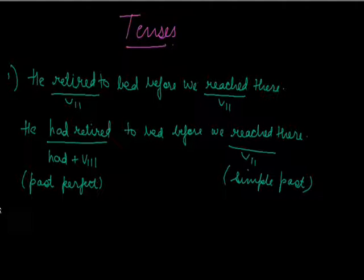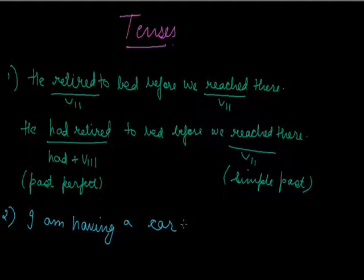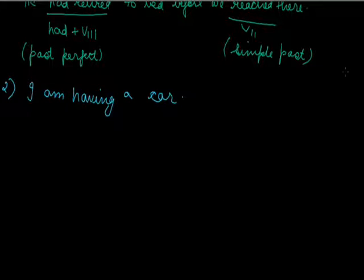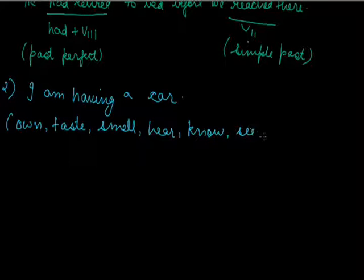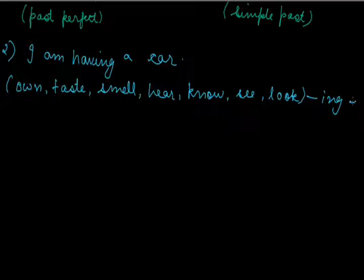Second question: I'm having a car. Whenever you are the owner of something, words like own, taste, smell, hear, know, see, look are not followed by -ing, unless there is a preposition after them. I'm having a car means I'm the owner of the car. Since having is followed by an article and not a preposition, you cannot say I'm having a car.